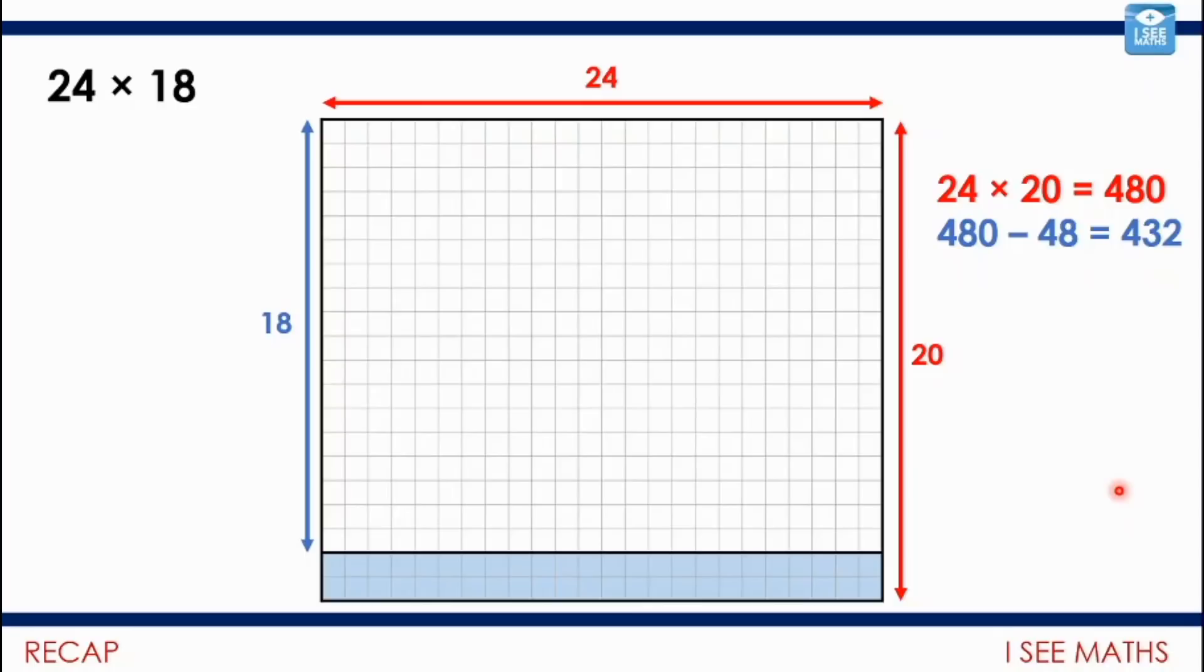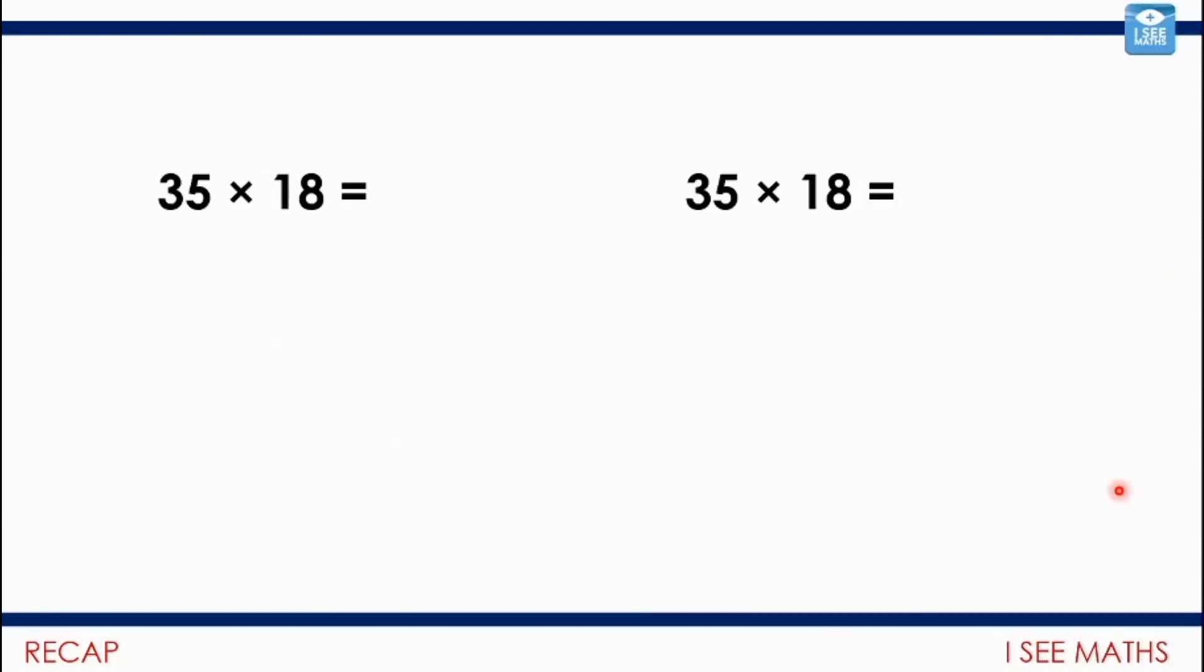This principle: how do we play around with numbers to make calculation easier or different? So 35 multiplied by 18. I've written it twice because I'm going to see if we can see that in a couple of different ways. Pause the video. Can you think of two different ways to have a go at doing that calculation?